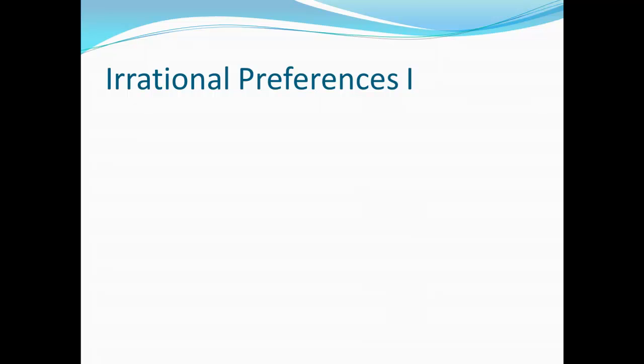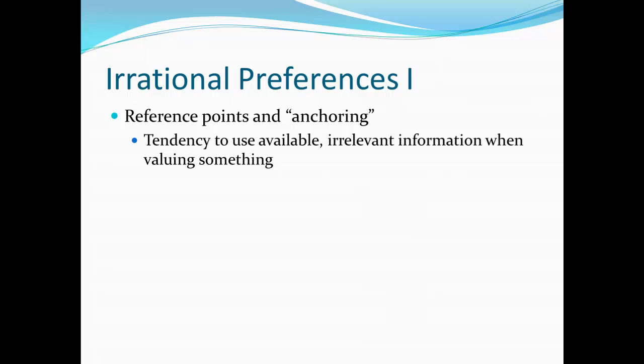Let's look at the first category of irrationalities: irrational preferences. We're going to discuss a few ways in which our preferences can be irrational. The first is the existence of what we call reference points in this anchoring phenomenon — a tendency for us to use available but totally irrelevant information when we're valuing something.